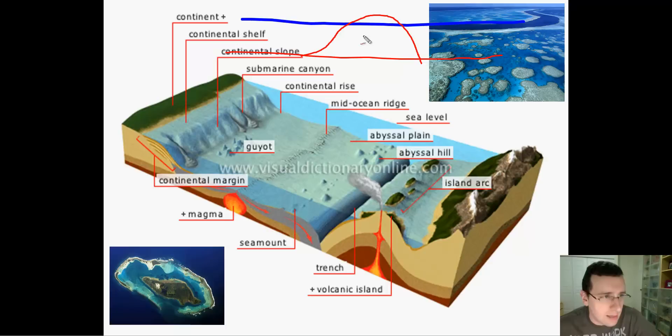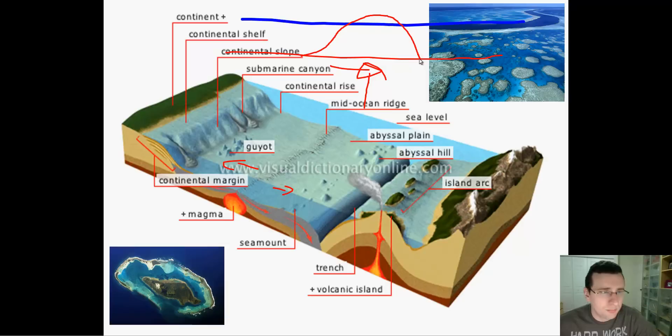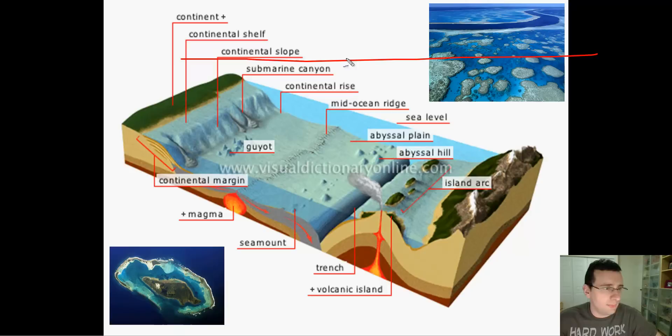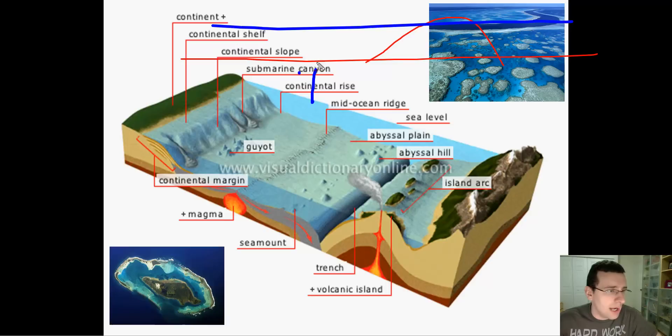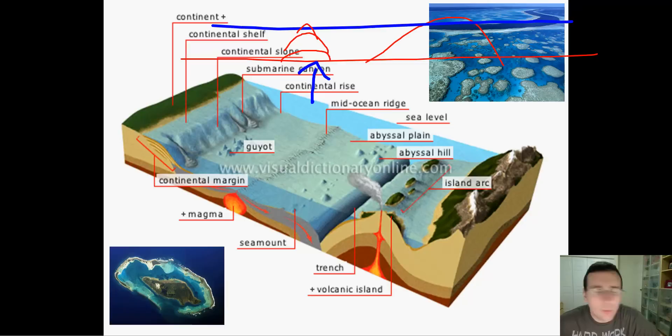Because the seafloor is spreading and stretching from the seafloor chain, eventually this seamount will travel away from the actual hot spot. A new island will then start to form at the hot spot location. That's how you get an island chain associated with a hot spot — essentially an island that's traveling away from the hot spot as the seafloor spreads.